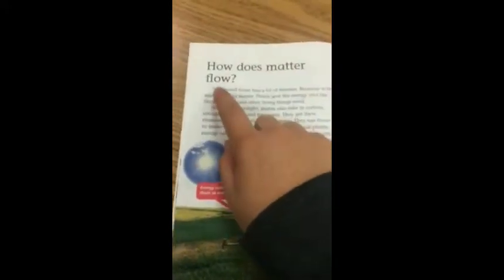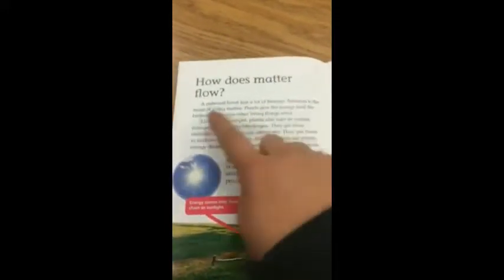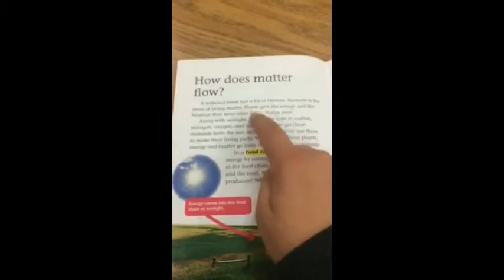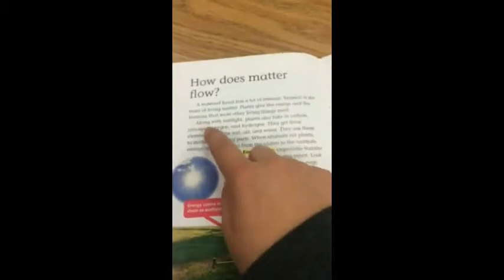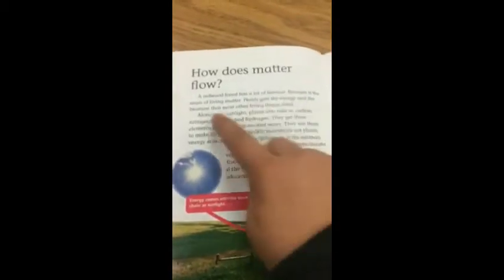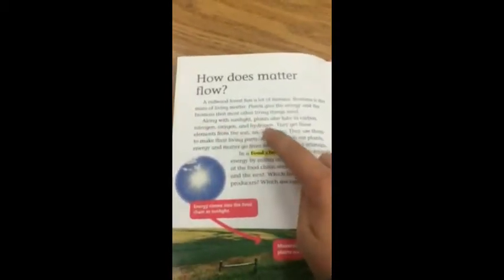How does matter flow? A redwood forest has a lot of biomass. Biomass is the mass of living matter. Plants give the energy and the biomass that most other living things need. Along with sunlight, plants also take in carbon, nitrogen, oxygen, and hydrogen.